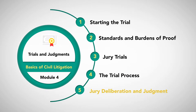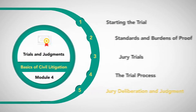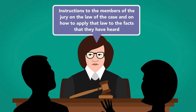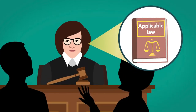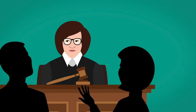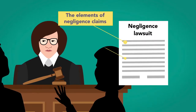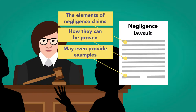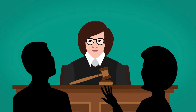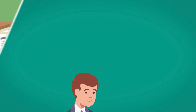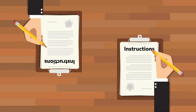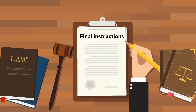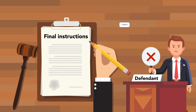At this point, the judge will give instructions to the members of the jury on the law of the case and on how to apply that law to the facts that they have heard. These instructions can be as simple or complex as the cases themselves. The judge must explain to the jury what the applicable law is — for example, if it is a negligence lawsuit, the judge would tell the jury what the elements of negligence claims are, how they can be proven, and may even provide examples. Before the instructions are given, the parties are given the opportunity to review the judge's proposed instructions and to make suggestions for what should be included. Parties can and often do write out entire suggested jury instructions. The judge is responsible for writing the final instructions. After the instructions are finalized, the parties can also object to any part of them. Improper jury instructions may constitute grounds for appeal.